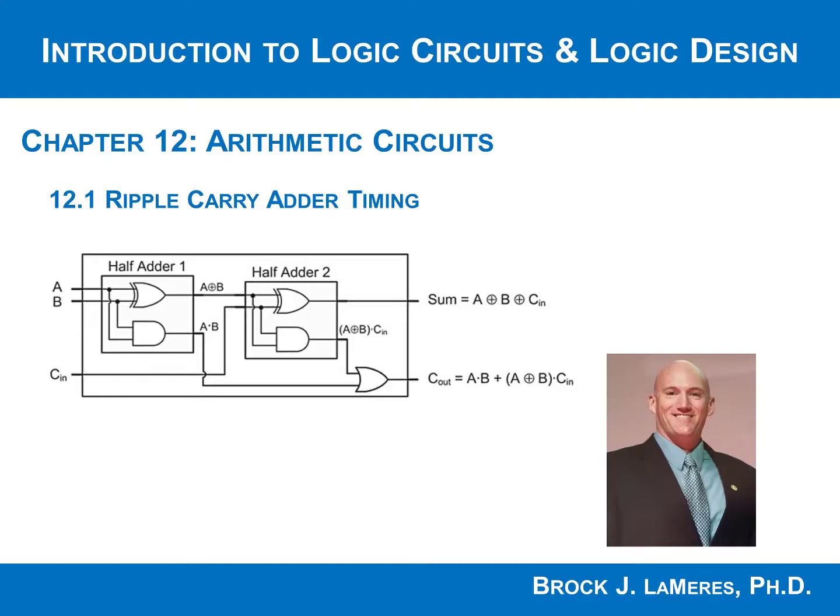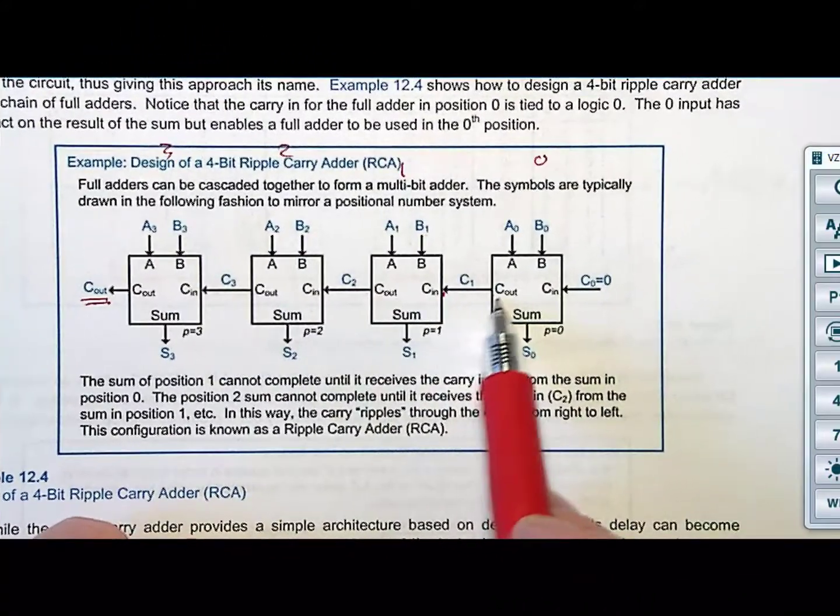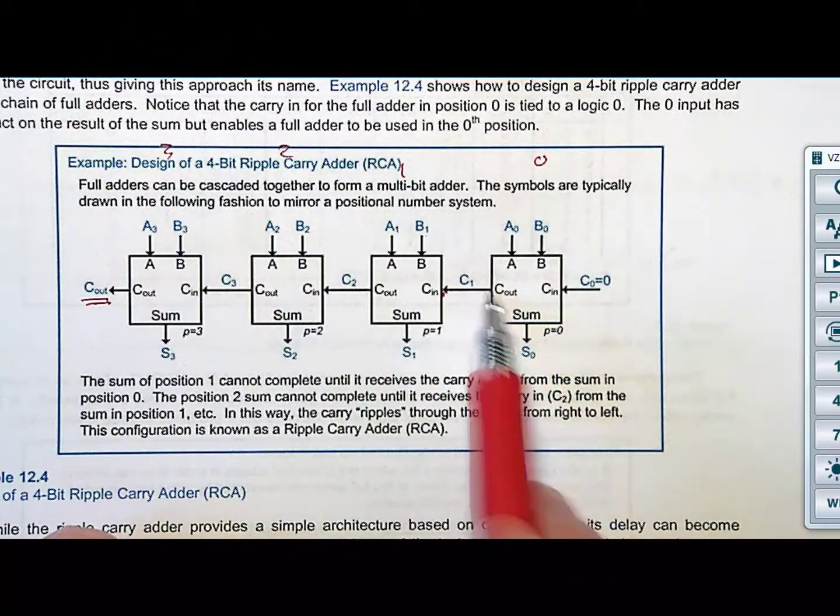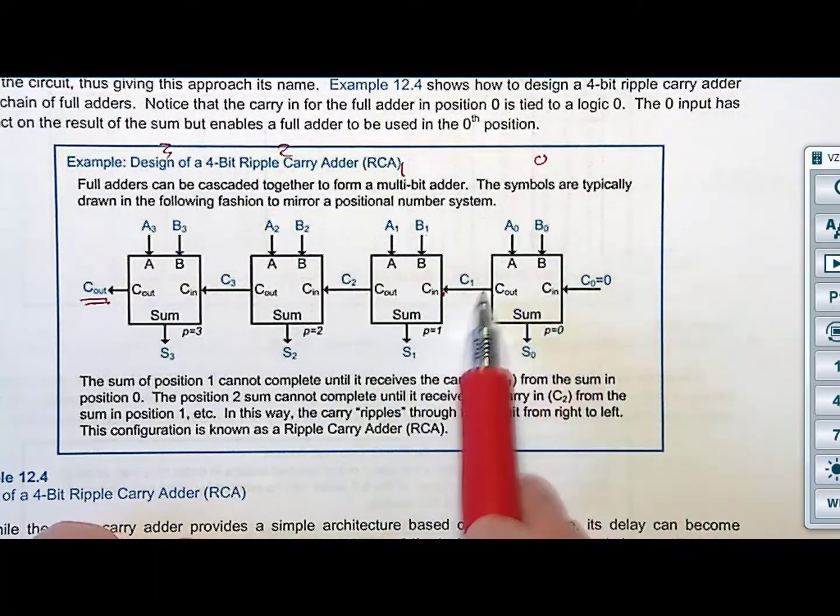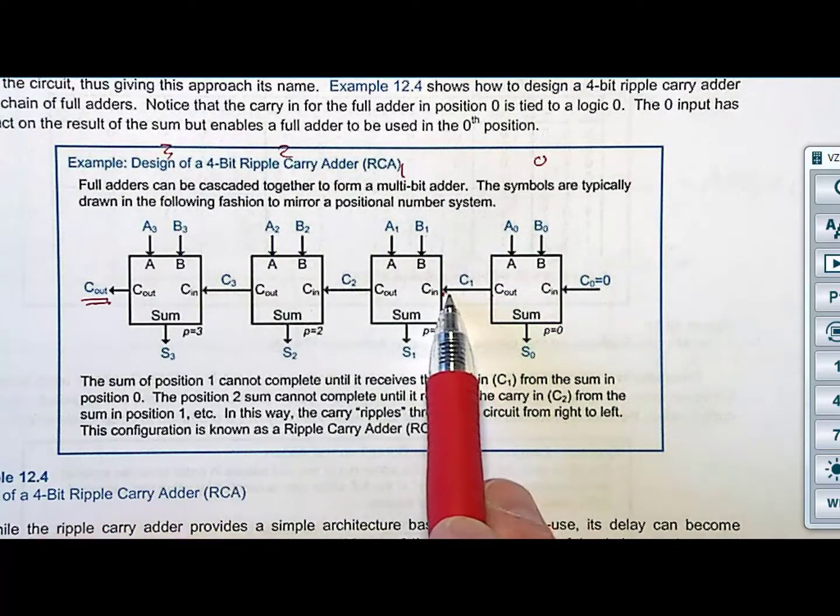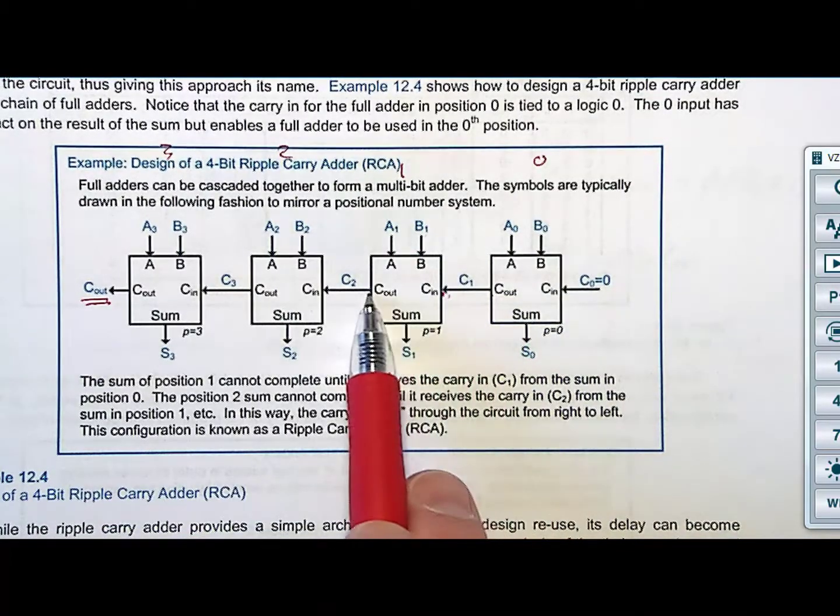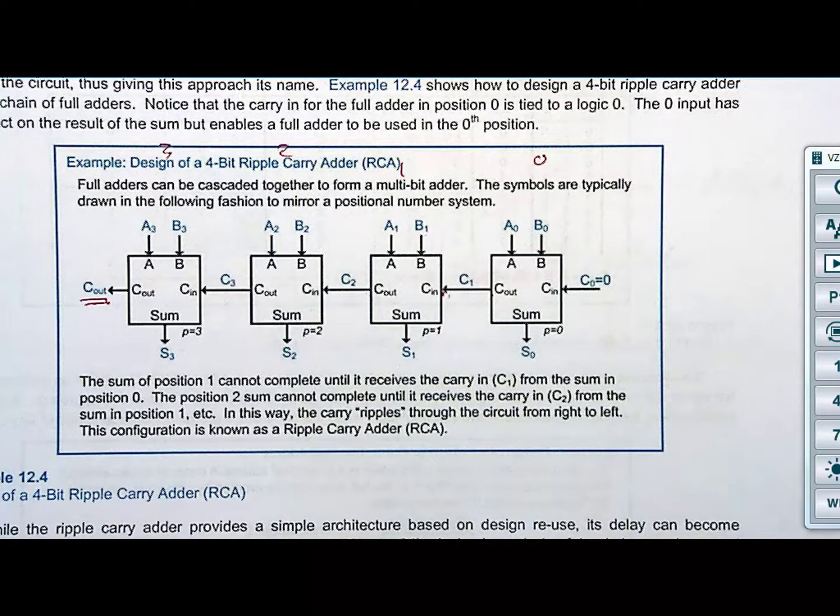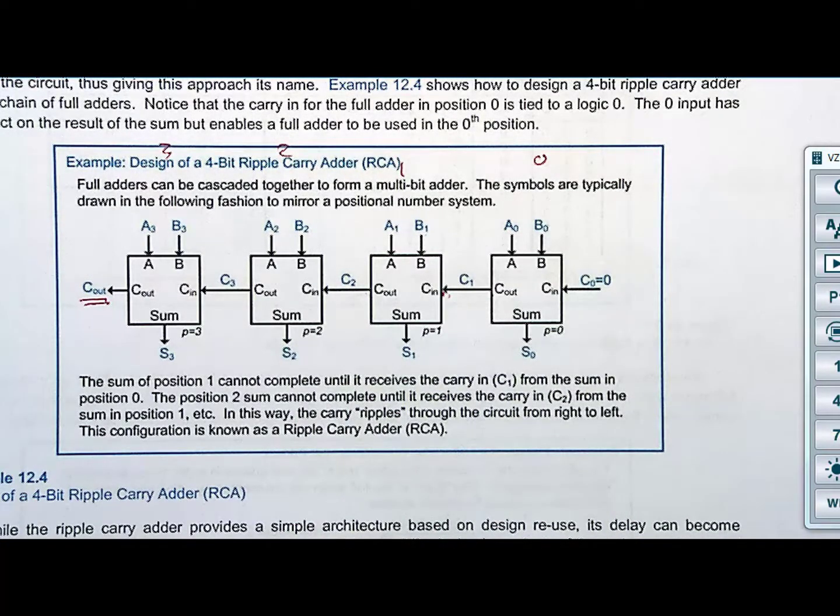It's called a ripple carry adder because the carry ripples through, meaning that you have to wait until this positional sum is completed before you move on to the next one. And then you have to wait until this one goes to the next one. And the problem with it is it's just like the ripple counter. It works really good if you run somewhat slow because you don't, you just go,